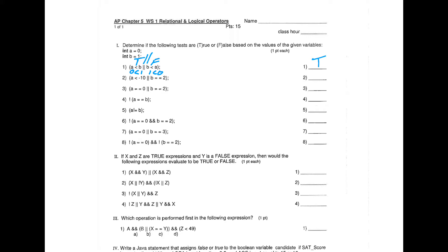This is also a great example of short-circuit evaluation. When Java runs code like this, it's not even going to look at the second half. If the first half is true and it's an OR statement, Java will say 'I don't even care what comes after that,' because true OR anything — true OR false — is always true.